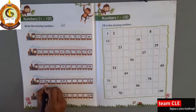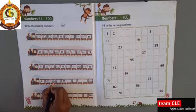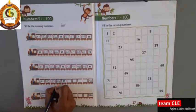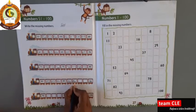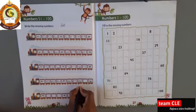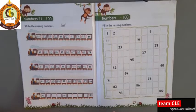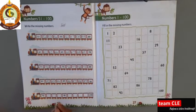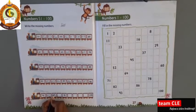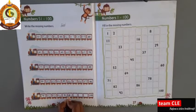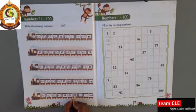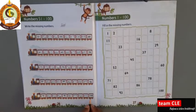81. 82. 83. 84. 85. 86. 87. 88. 89. 90. 91. 92. 93. 94. 95. Ninety-five, ninety-six, ninety-seven, ninety-eight, ninety-nine, hundred.